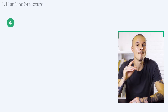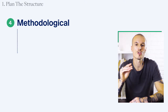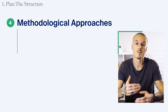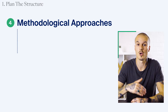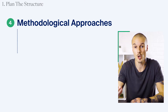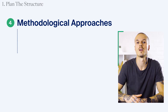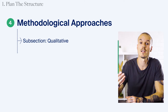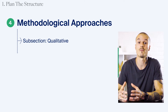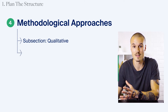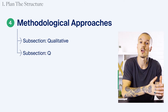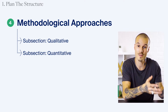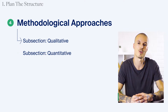Finally, methodological approaches. If you're going to group the literature according to the methodologies used, one subsection might analyze sources that have used a qualitative approach. Another subsection could analyze papers that have used a quantitative approach.